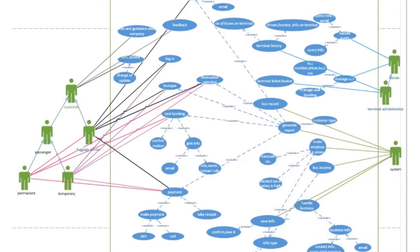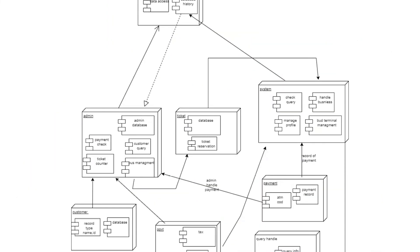Now I am going to explain the Deployment Diagram. A Deployment Diagram is used to represent the deployment view of a system. In the deployment diagram we break the system into different blocks, and it is related to the component diagram because components are deployed using the deployment diagram.